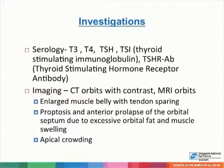Some baseline investigations which should be performed in patients with thyroid eye disease consist of a thyroid function test, as well as autoimmune serology, which includes TSH receptor antibody, and imaging such as CT orbits with contrast. On CT, we'd be looking for an enlarged muscle belly which spares the tendons, and to characterize any proptosis and anterior prolapse of the orbital septum due to excessive orbital fat and muscle swelling. Patients who have apical crowding are at higher risk of compressive optic neuropathy.